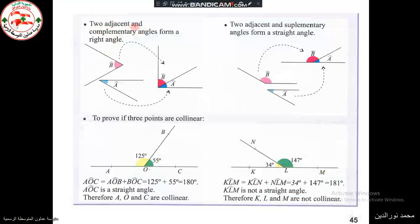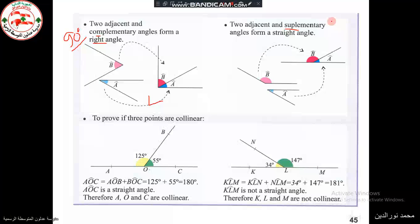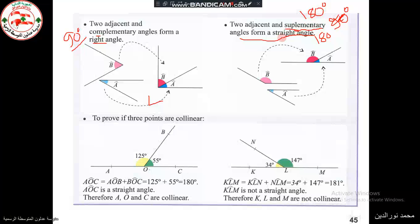Two adjacent angles are complementary when their sum is 90 degrees, and they form a right angle. Two adjacent angles are supplementary — two angles are said to be supplementary if their sum is 180 degrees, and they form together a straight angle.